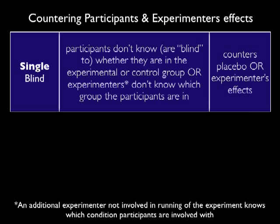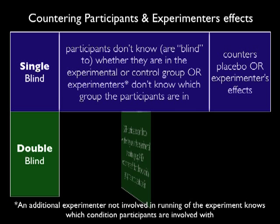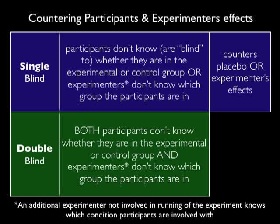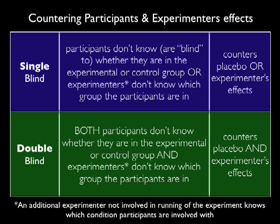This counteracts both the placebo or the experimenter's effects. Remember, single-blind only addresses one of those. A double-blind experiment involves both the participants and the experimenters not knowing which treatment group the participants are in. This counters both placebo and experimenter's effects. This obviously requires a lot more setup, and so that's why it's not as common to put in place.